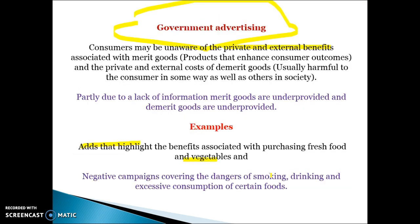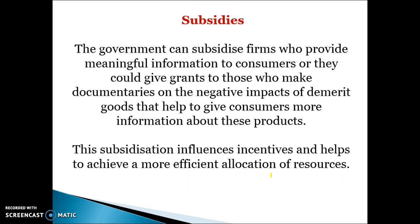Another example is subsidies. Firms can subsidise things like documentaries — for example, the documentary Supersize Me was partly funded by the government to encourage people to stop eating McDonald's, which is bad for living standards and health. The government may subsidise firms to provide more information or give grants about the negative impacts of demerit goods, with the intention of achieving a more efficient allocation of resources by stopping us from buying those products.